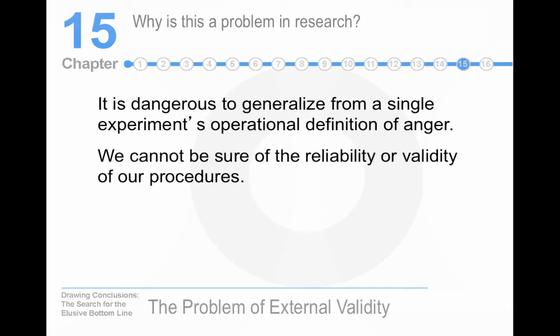Why is this a problem? It's dangerous to generalize from a single experiment to the real world or to every other population. So we tend to hedge things in our writing — we write up our results and say things like 'the findings suggest' rather than 'the findings prove,' or 'it appears that' rather than 'it clearly shows.' If you want truth, you have to leave research and go to religion, because that's where people believe they have the truth.